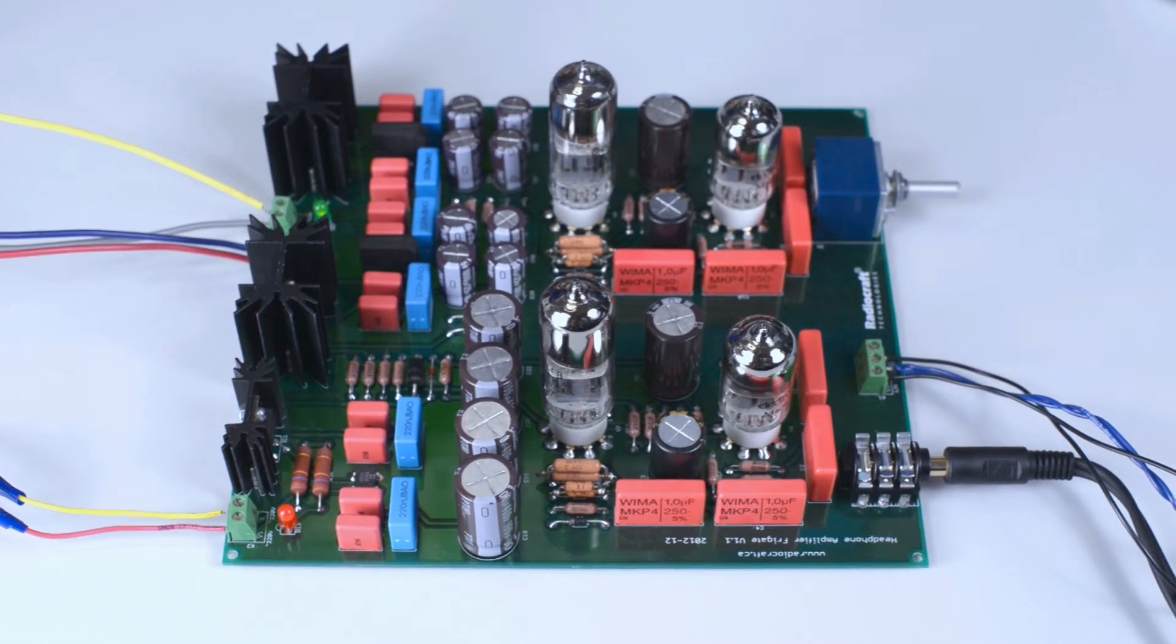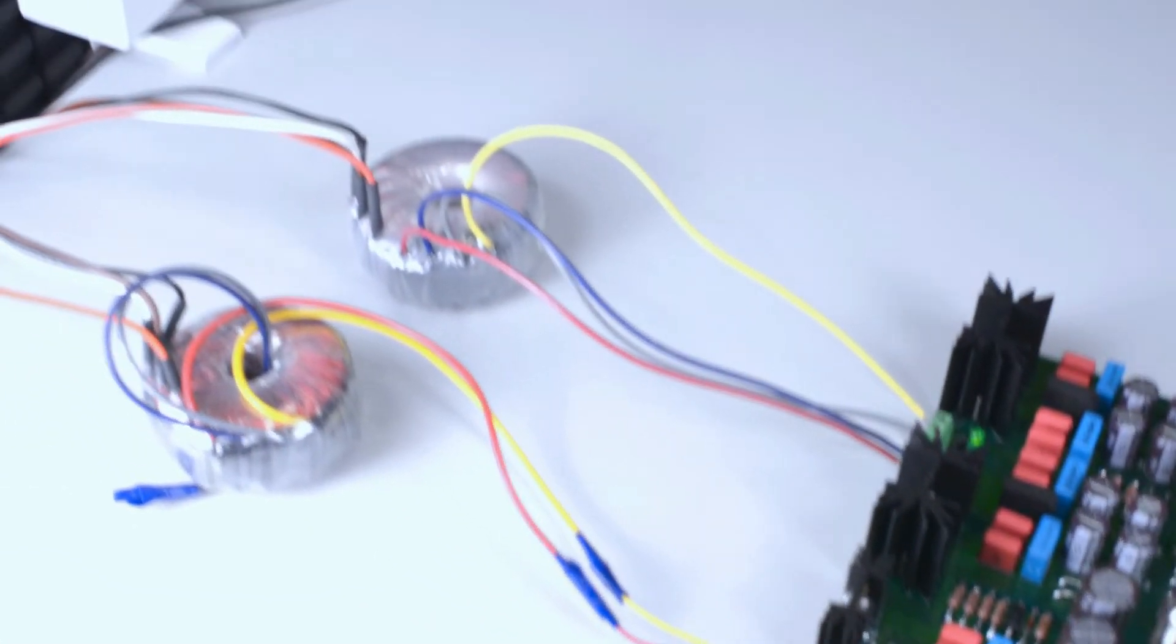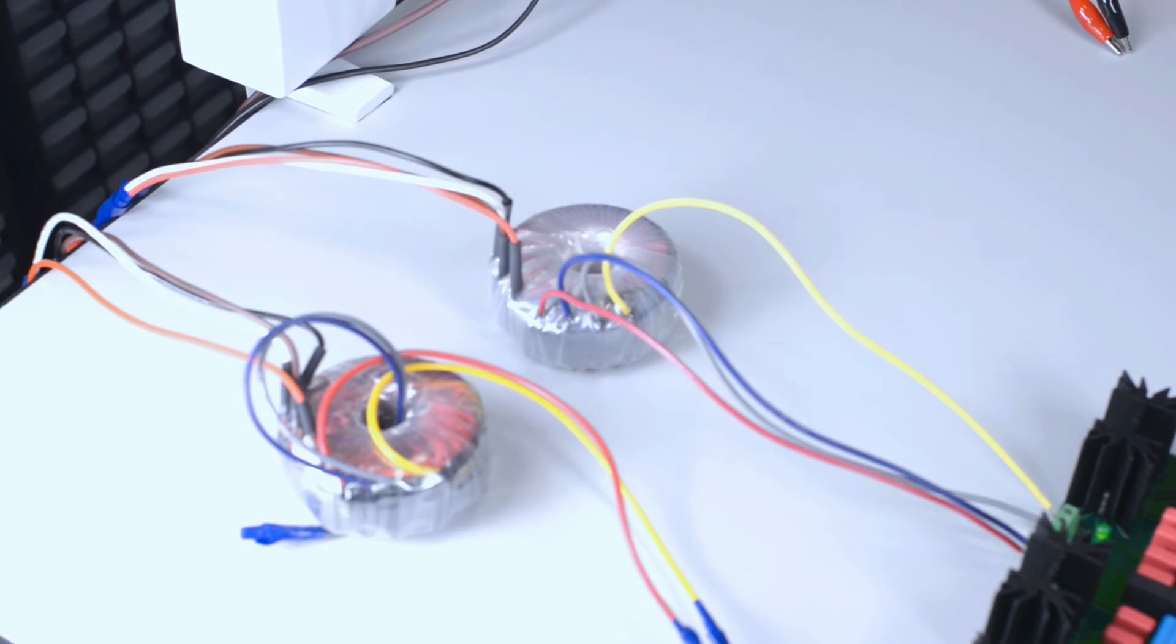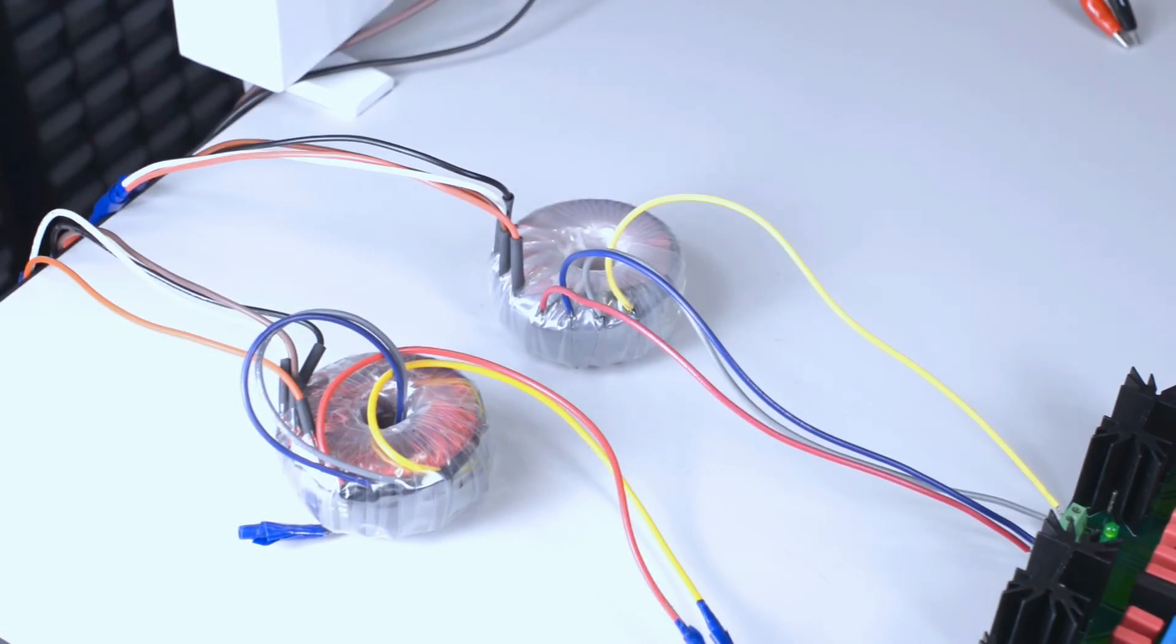In this installation we are using two toroidal transformers. The transformer which is the closest to us is the B-plus transformer. The transformer which is the farthest to us is a filament transformer delivering low AC voltage to the left and right channels of the power supply, which then is converted to DC voltage and supplied to the filaments of the left and right channel.